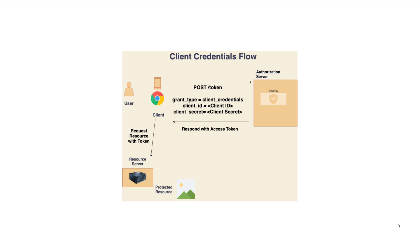When the client needs to access the protected resource, similar to other grant types, it will include the access token as part of the request header, and then the resource server will verify the validity of the token by sending it to the authorization server. You may have already observed that the client credentials flow is significantly simpler compared to the other two authorization code flows, because of the confidentiality involved based on the client.